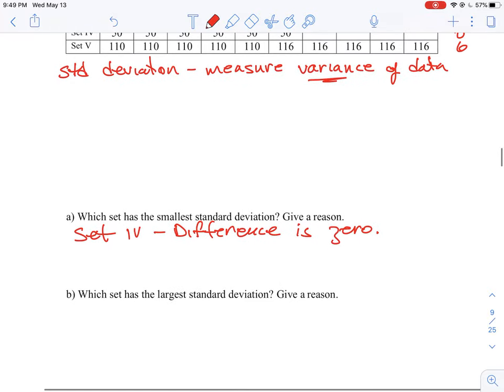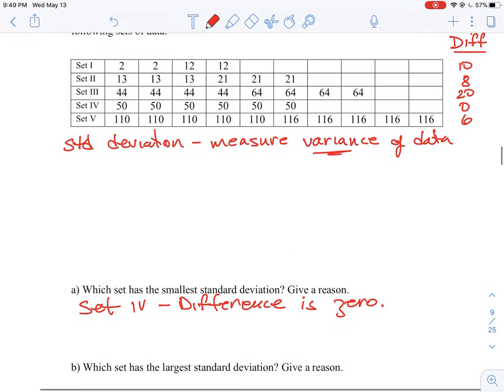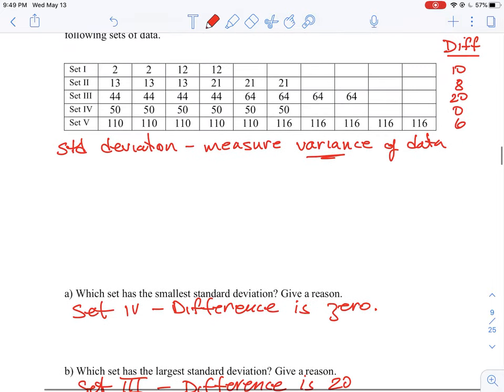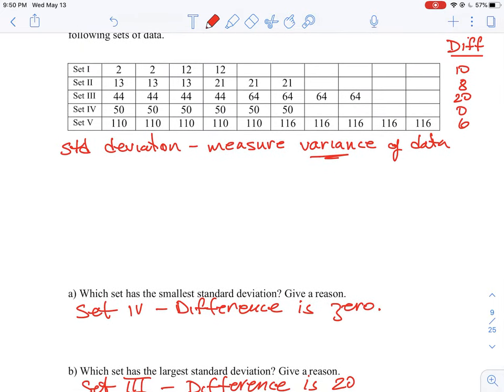So then the largest standard deviation would just be the opposite. It would be the data that has the largest set of differences or the largest dispersal in the variance. And that would be set three. Because the difference is, in this case, 20. So the thing that we're looking for is that's how we could get a feel for what the magnitude of the standard deviation would be just by the differences in the data.